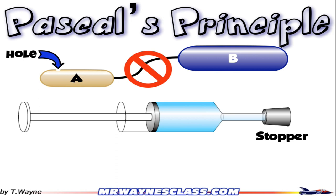Now I have an enclosed container — that's my syringe. What Pascal's Principle allows me to do is compare the pressure at location C by the plunger to the pressure at the opening at the end where the stopper is, at location D. Since it's an enclosed tank, the change in pressure at C is felt automatically at point D.